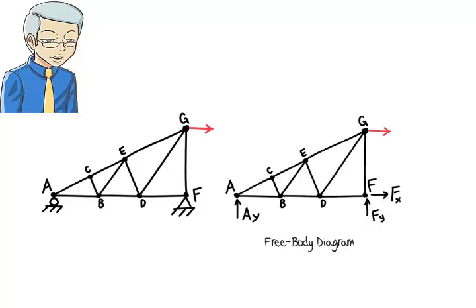In this example, Rule 3 applies to joints C, B, E and D in that sequence. Therefore, BC, BE, DE and DG are zero-force members.